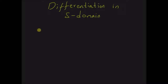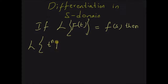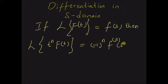The property can be stated as follows: if the Laplace transform of a function f(t) is equal to F(s), then the Laplace transform of t^n multiplied by f(t) is equal to (-1)^n multiplied by the nth derivative of the Laplace transform of f(t). The symbol F^(n)(s) stands for the nth derivative with respect to s of the function F(s).